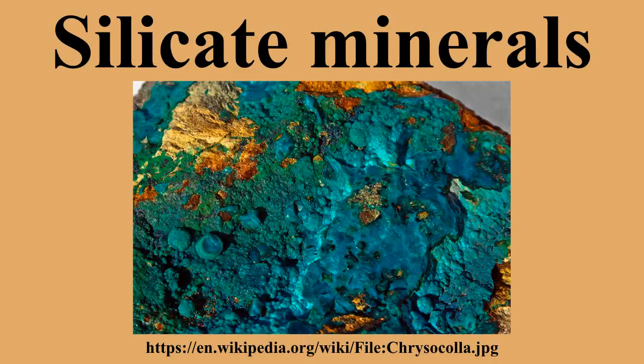Phyllosilicates form parallel sheets of silicate tetrahedra with a Si:O ratio of 2:5. Nickel-Strunz classification O9.E. All phyllosilicate minerals are hydrated, with either water or hydroxyl groups attached. Examples include: Lizardite, Mg3Si2O5(OH)4; montmorillonite; vermiculite; sepiolite, Mg4Si6O15(OH)2·6H2O; pyrophyllite, Al2Si4O10(OH)2; glauconite; and the chlorite group.